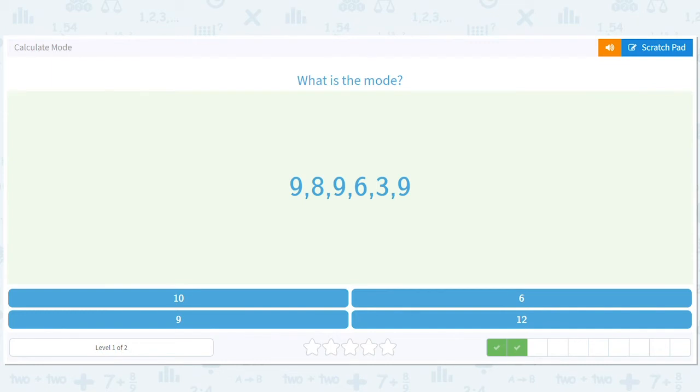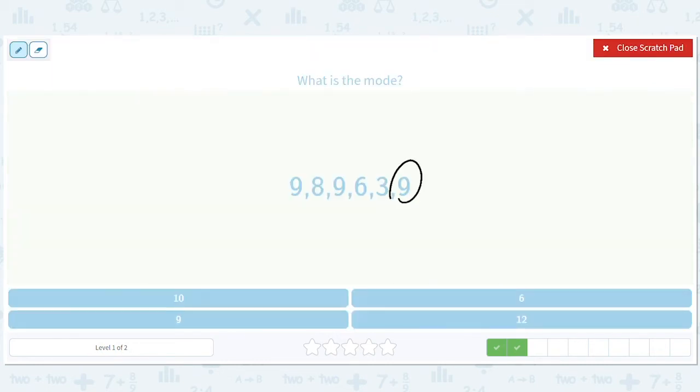How about here? What's the mode? So you would end up with nine, nine, nine. That pops out at you. So there are three nines. There's not three of anything else, right? So nine.